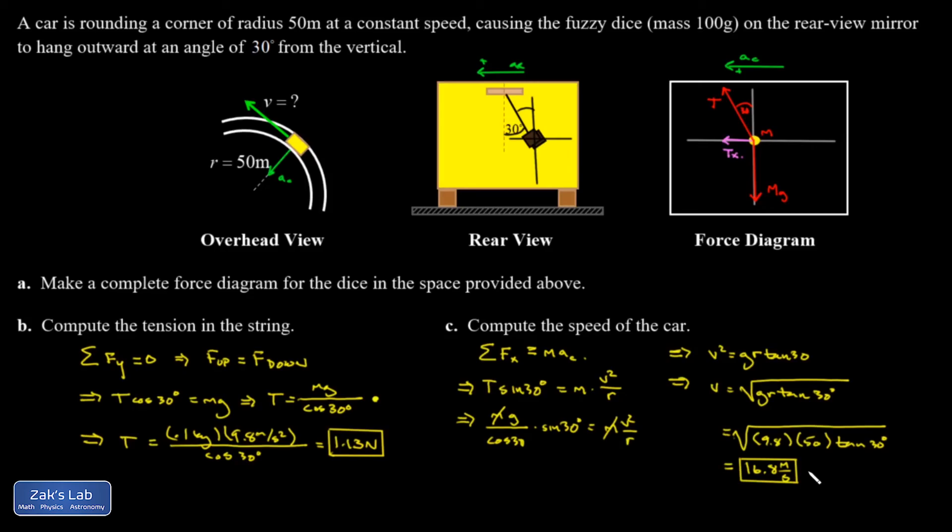So that's kind of a cool idea. We can actually use the tilt of the fuzzy dice on the rearview mirror to figure out how fast our car is going. If you find the physics content on Zach's Lab helpful, click on the Zach's Lab logo on the right to browse playlists and subscribe to the channel. I produce over 100 new videos per month and subscribing is the easiest way to find new content. Thanks for watching.